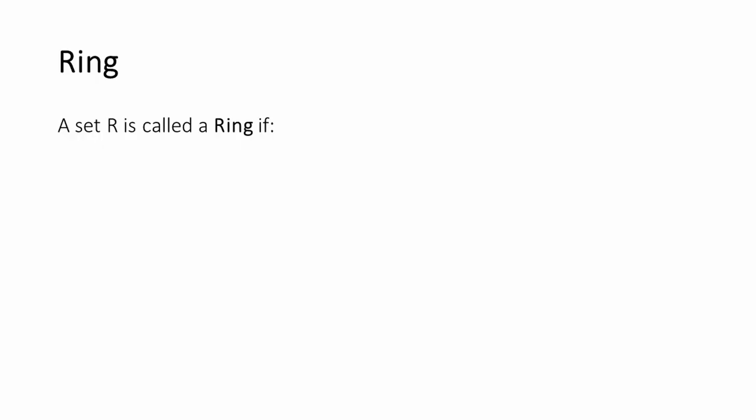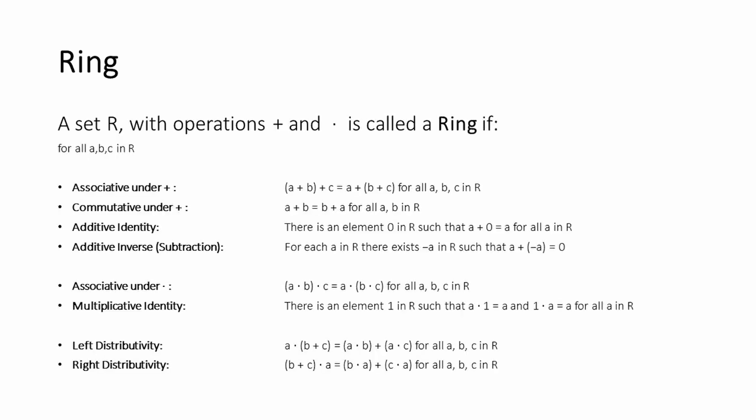A ring is a set of mathematical objects, like numbers or polynomials, which has the same properties as the integers. We can add, subtract, and multiply anything in the set and get out something else that is also in the set. Notably, this doesn't account for division, because you can't necessarily divide two integers and get out another integer. As we learn at school, we can add, subtract, and multiply polynomials to get another polynomial — so polynomials are an example of a ring.